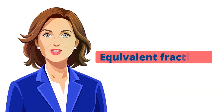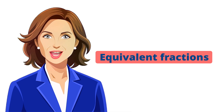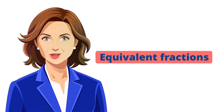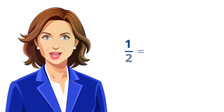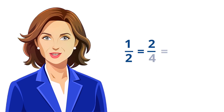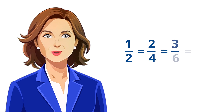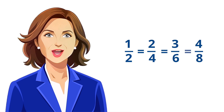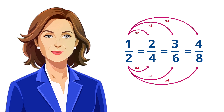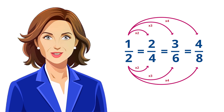Those are called equivalent fractions. They look different, but actually represent the same value. For example, one over two is the same as two over four, three over six, or four over eight. You can find equivalent fractions by multiplying or dividing both the numerator and the denominator by the same number.